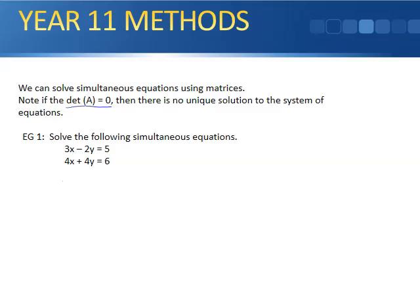So set it up as a matrix equation. So we have 3, negative 2, 4 and 4. And this we're looking at x and y equals 5 and 6.